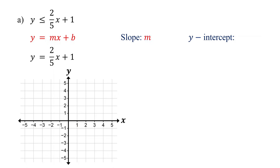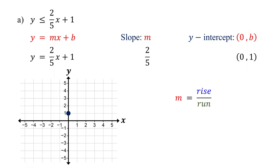The slope is the coefficient of x. The y-intercept is the constant term. For this equation, the slope is two-fifths and the y-intercept is the given point. Plot the y-intercept on the coordinate plane, then plot another point using the slope. Slope is rise over run, and here it is two-fifths.